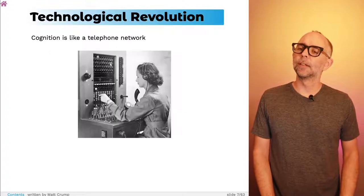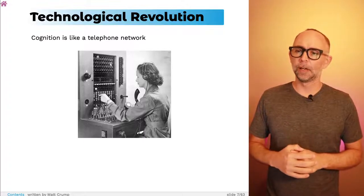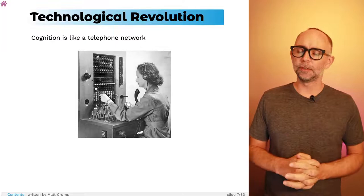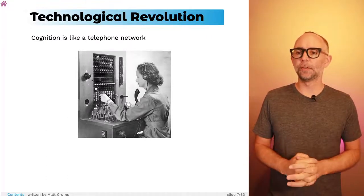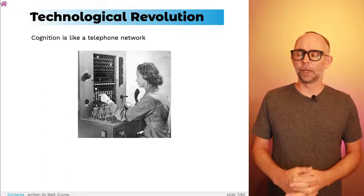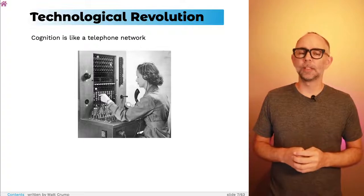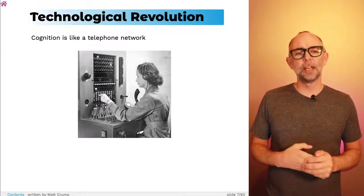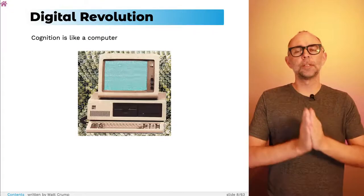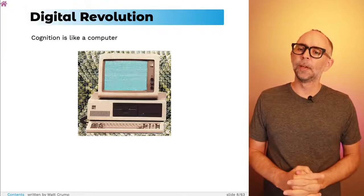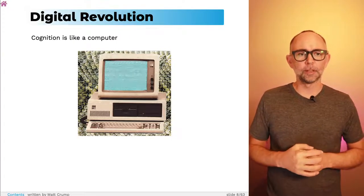We'll expand on that in the lecture. We'll also transition from the assembly line metaphor to what I'll call the telephone network metaphor, occurring roughly during the time when telephone technology was being developed — the technological revolution. In the 30s, 40s, and 50s, we see people talking about cognitive processes as if they're like a telephone network.